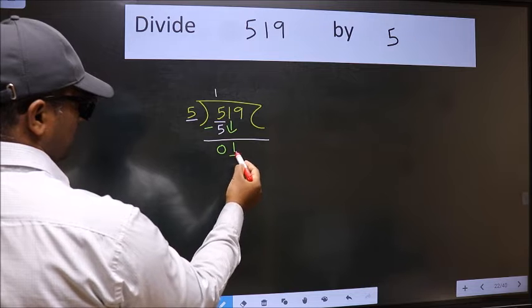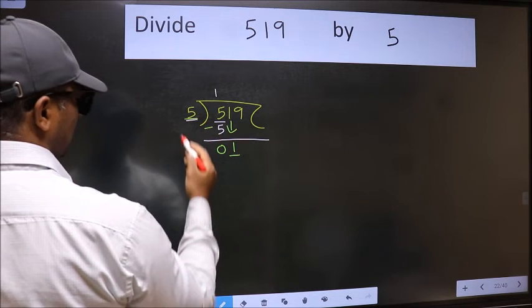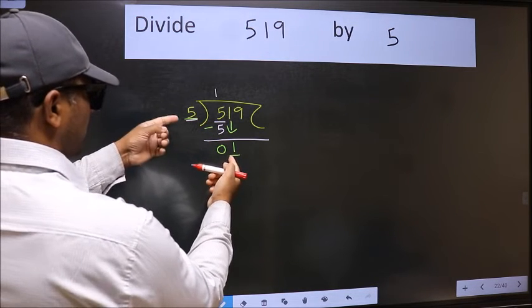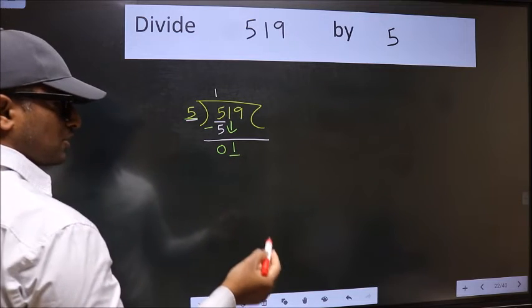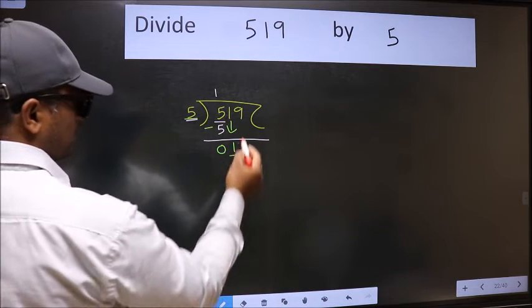1 down. Now here we have 1 and here 5. 1 is smaller than 5, so we should bring down the second number.